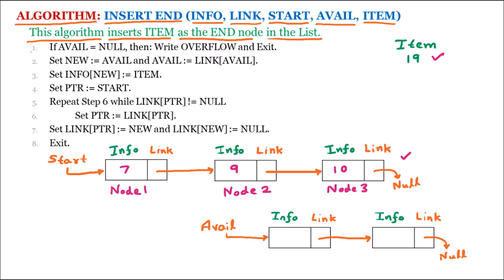Line number 1 of the algorithm says: if avail is null. We know that avail is the list which provides us available spaces. But if avail is null, that means there is no node available. So if we don't have any free node, we cannot insert. We write overflow and exit from the algorithm.